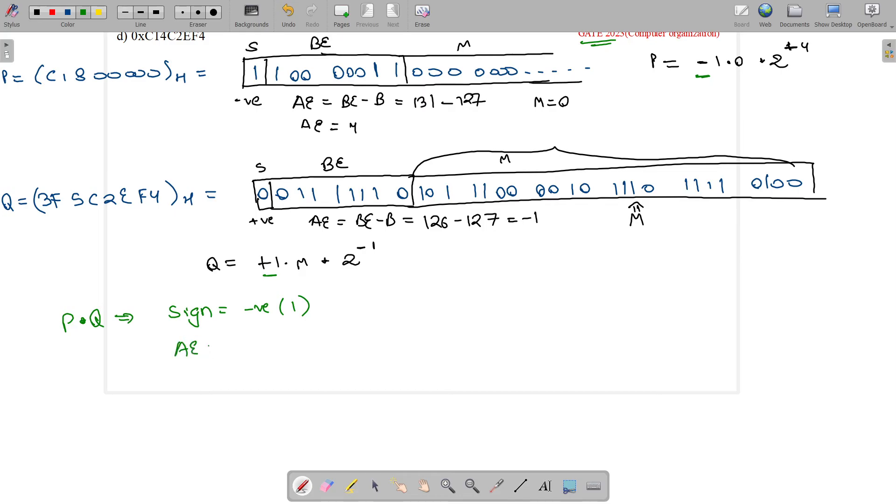What will be actual exponent? Actual exponent = 4 + (-1) = 3. What will be its mantissa? Mantissa will be this big number, let's suppose it to be X.